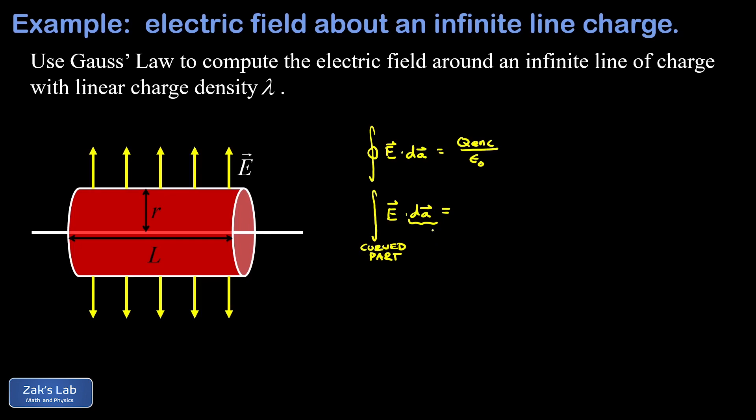So with the electric field parallel to that, the dot product becomes trivial. And now I just have the integral of e times dA where e and dA are just magnitudes of those vectors.